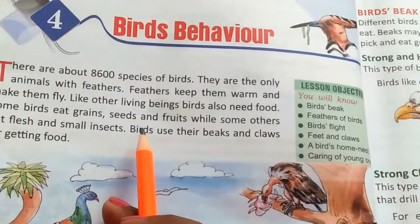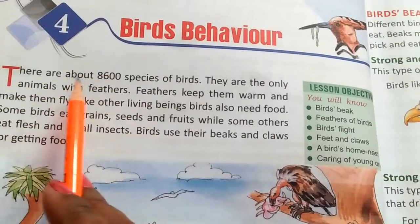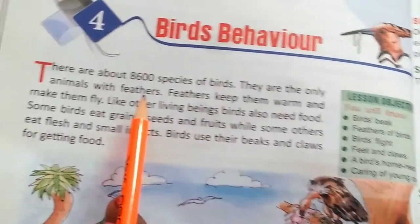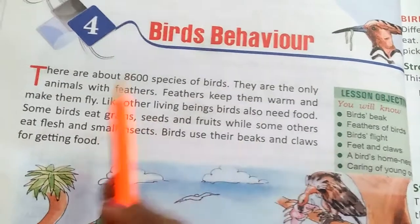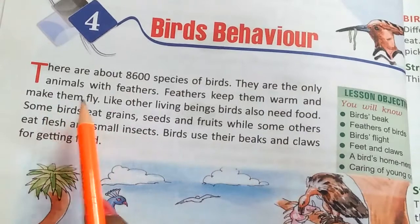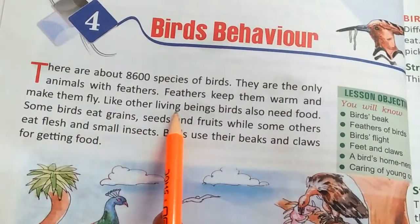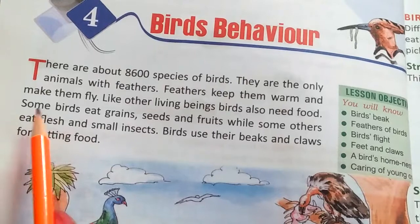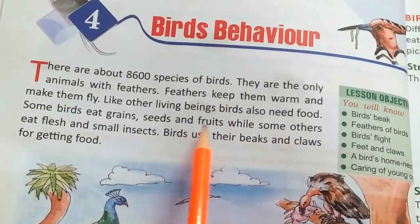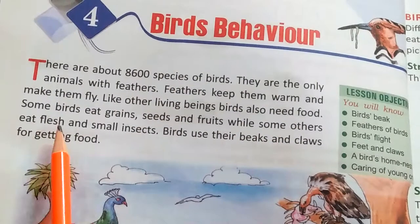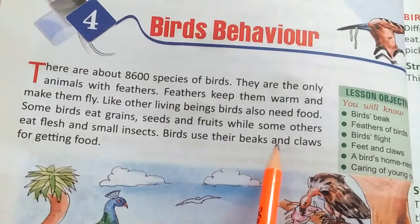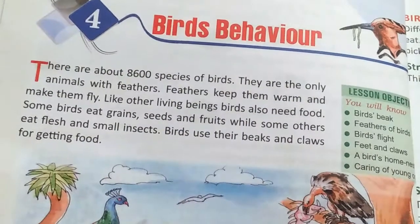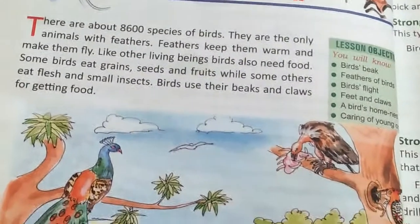Today I will explain the first part. There are about 8,600 species of birds. They are the only animals with feathers. Feathers keep them warm and help them fly. Like other living beings, birds also need food. Some birds eat grains, seeds and fruits, while some others eat flesh and small insects. Birds use their beaks and claws for getting food.